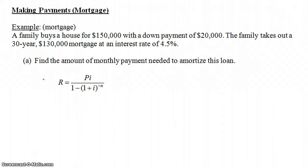We have a formula from the previous video. This really came from the present value of an annuity formula, and this is an annuity because you're making the same payment every month for 30 years. By the way, the 4.5% — something the problem doesn't mention — will be considered 4.5% compounded monthly. If you're making monthly payments, the interest rate is compounded monthly. That's always the way it is for mortgages.